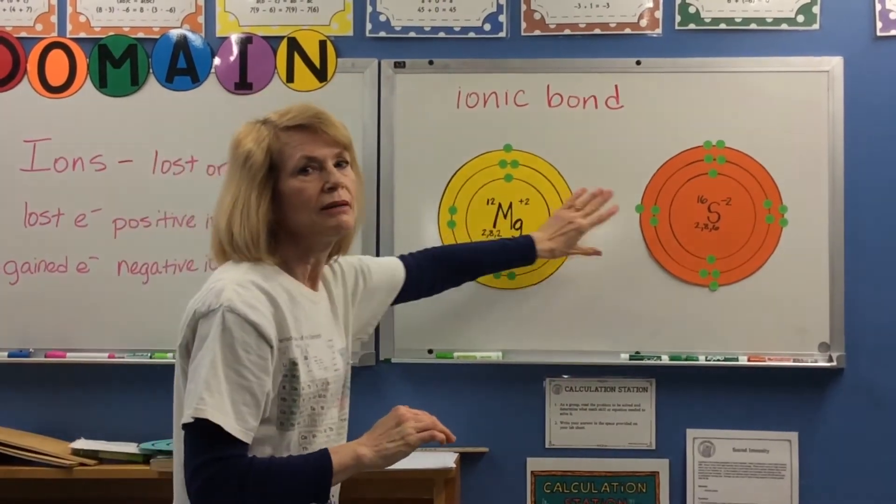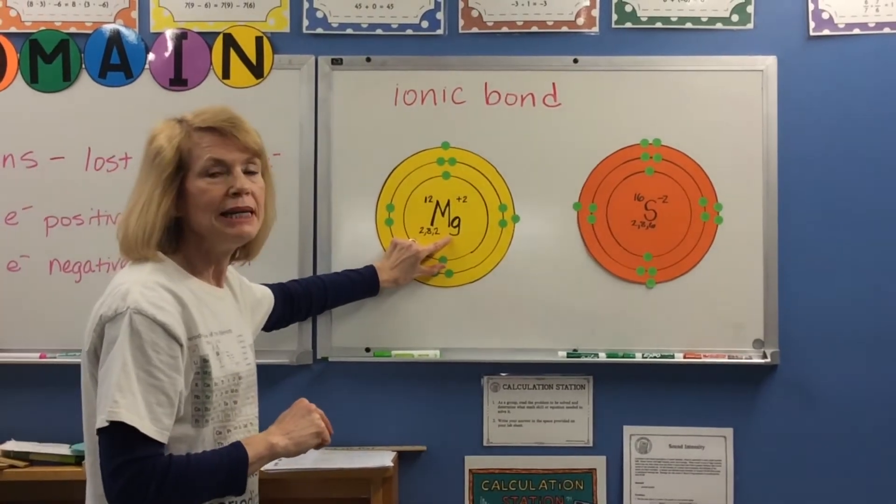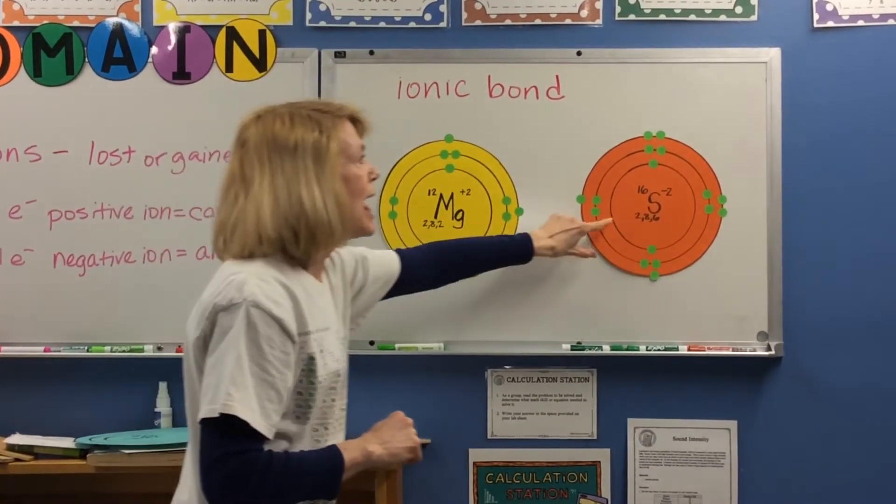Now we've got two different atoms. We have an atom of magnesium and an atom of sulfur.